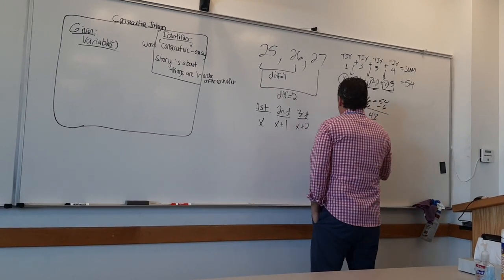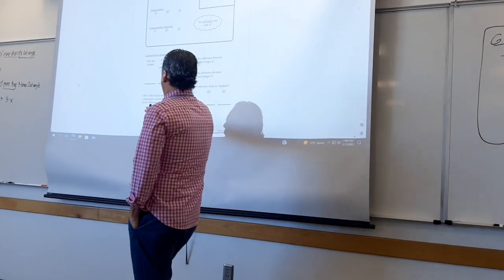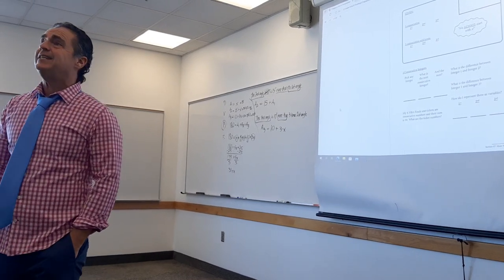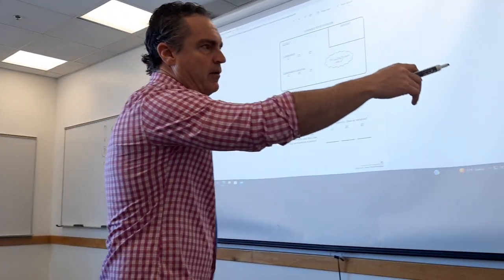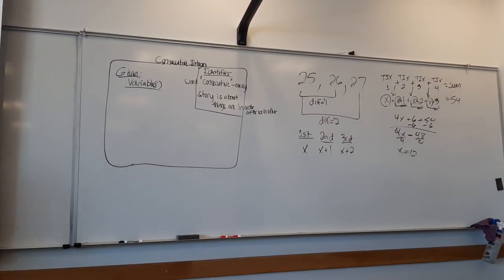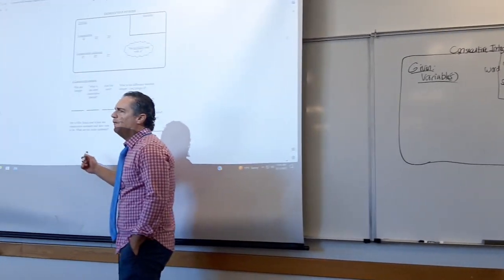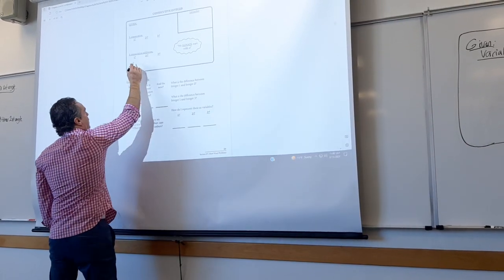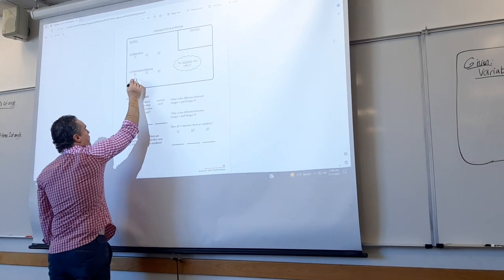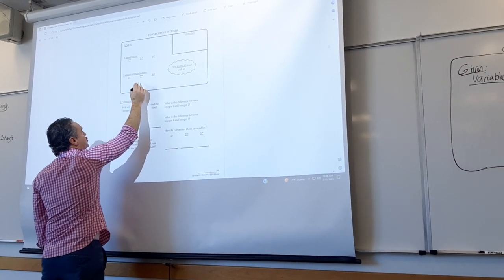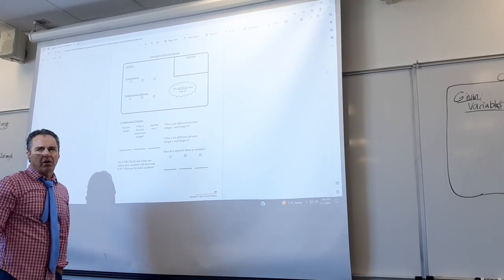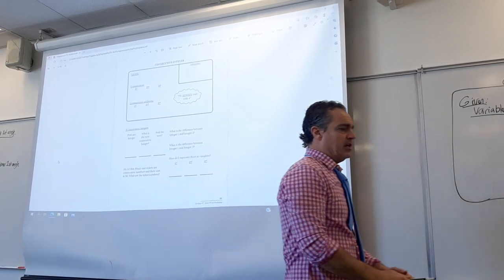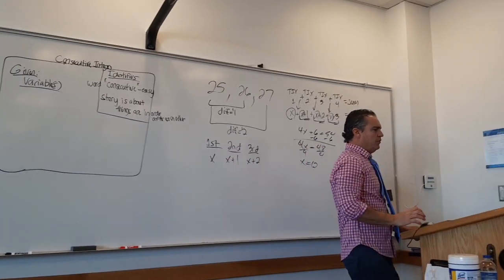x = 12. They asked for the ticket numbers — plural — so that's not the final answer. The answer is 12, 13, 14, 15. Now write down x, x plus two, and x plus four — because that's for consecutive odd or even integers, where the difference is always two.